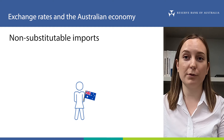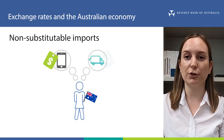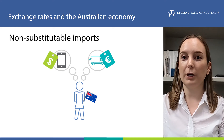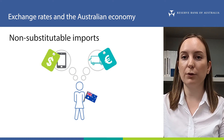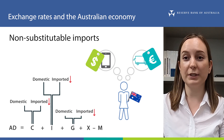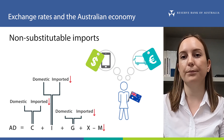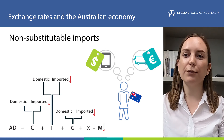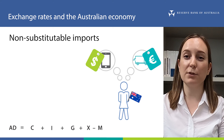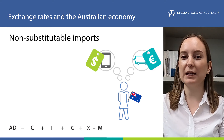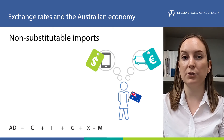What about imports where there's no domestic substitute, like iPhones, which are not produced in Australia? The prices of these goods and services will increase and spending on them will fall. Consumption, investment and government spending will all decrease, and so will imports. The changes in consumption, investment and government spending fully offset the change in imports, so there's no change in aggregate demand. As a result, we tend to focus less on these types of imports and more on imports that compete with domestic substitutes.